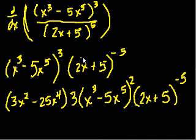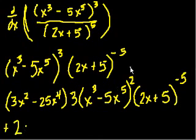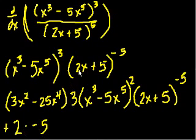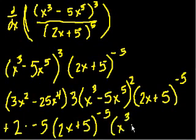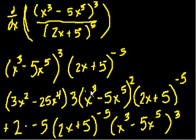Then we add the derivative of the second term. The derivative of the inside of 2x plus 5 is just 2 — the derivative of 2x is 2, the derivative of 5 is 0. So it's 2 times minus 5, times 2x plus 5 to the minus 5 power, then multiplied by the first expression x to the third minus 5x to the fifth to the third power. I know that's really messy, but I just wanted to show you that the product rule and chain rule can apply to a lot of different problems.